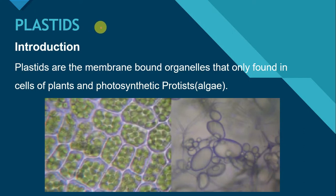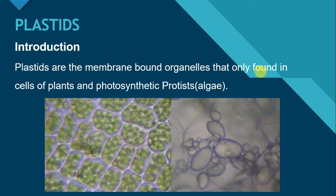We can say plastids are the pigment-containing bodies. Pigment here means the substances which give color to these plastids. Plastids are membrane-bound organelles found only in cells of plants and photosynthetic protists, including algae. Plastids are very important organelles.